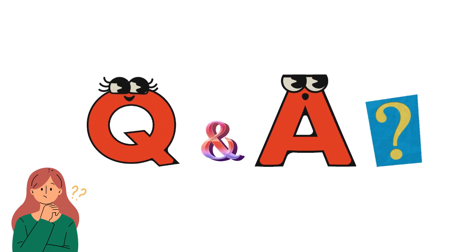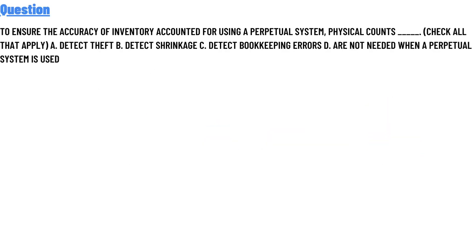Today's question: to ensure the accuracy of inventory, accountants using a perpetual system perform physical counts. Check all that apply. Option A: detects theft. Option B: detects shrinkage. Option C: detects bookkeeping errors. Option D: are not needed when a perpetual system is used. The correct answer is A, B, and C.